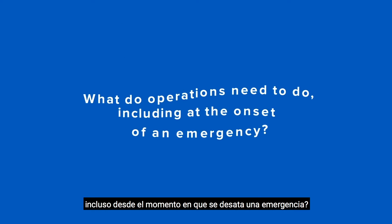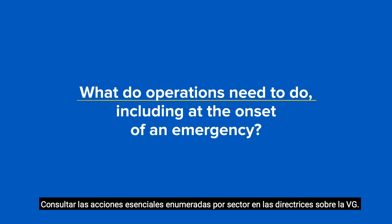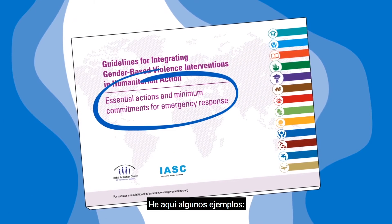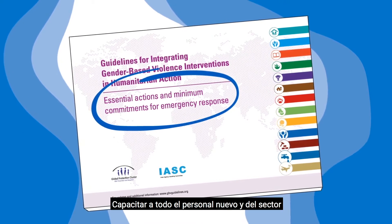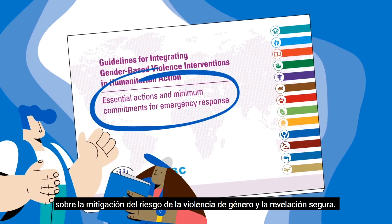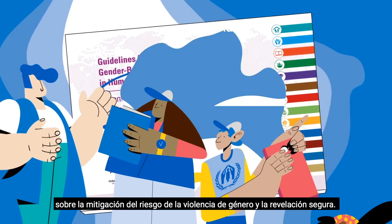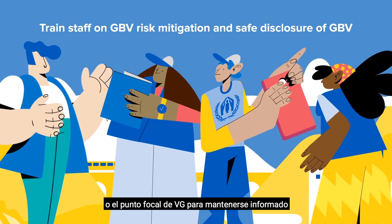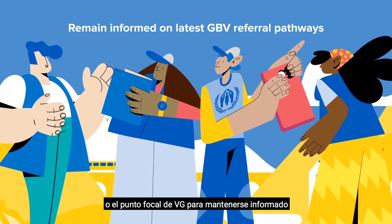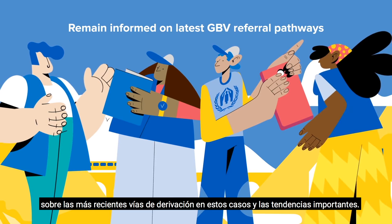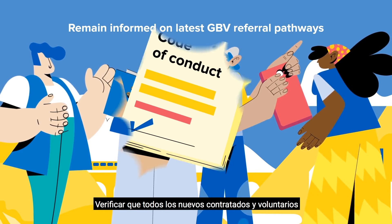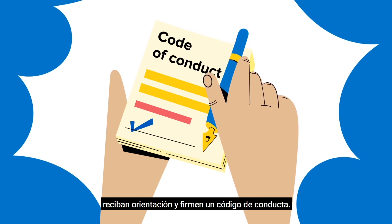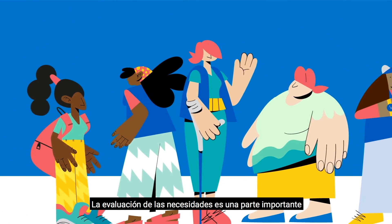What do operations need to do, including at the onset of an emergency? See the essential actions listed by sector in the GBV guidelines. Here are a few examples: train all new and sector staff on GBV risk mitigation and safe disclosure; incorporate regular check-ins with the GBV coordinator or GBV focal point to remain informed on the latest GBV referral pathways and important trends.